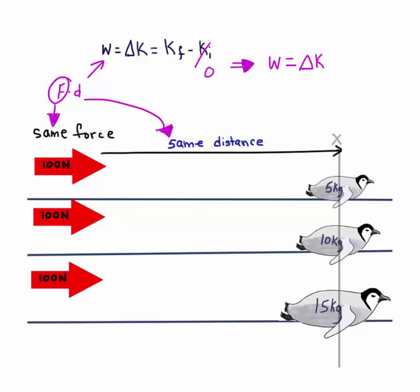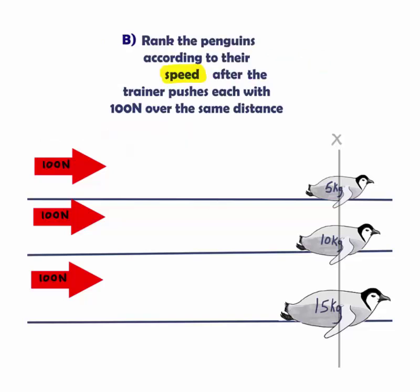In the next question, we are looking for the speed after the trainer has pushed each penguin with 100 newtons. Which penguin will be the fastest? Corrine is the fastest. Why?